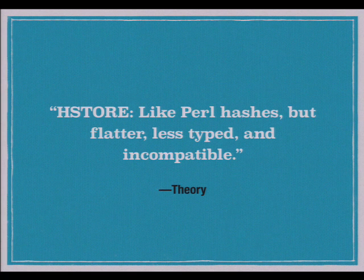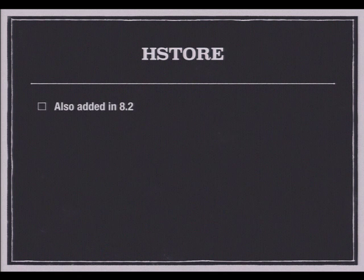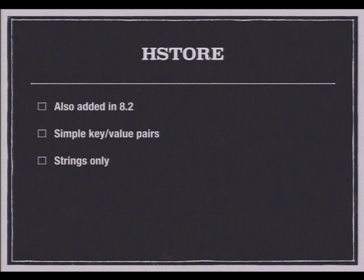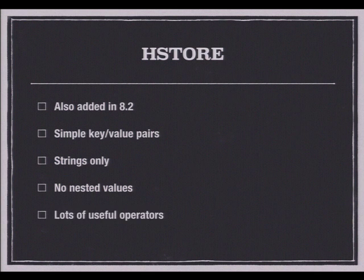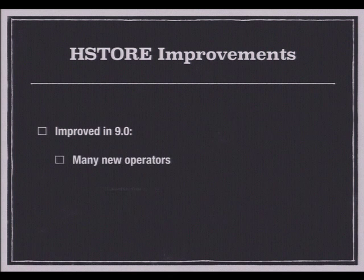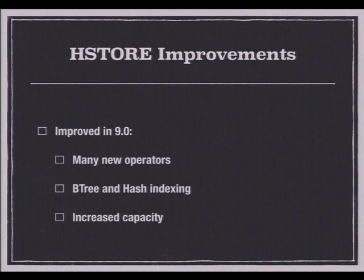So let's talk about HStore. The HStore extension was also added to the contrib modules in Postgres 8.2. It supports simple key-value pairs — keys and values are only allowed to be strings, there are no nested values, only top-level keys. But there are lots of very useful operators for dealing with it, plus GiST and GIN indexing. In Postgres 9.4, a number of improvements were made with new operators, functions, and B-tree and hash indexing. The capacity was increased so HStore can be as large as will fit in TOAST — about two gigabytes. Don't do that.